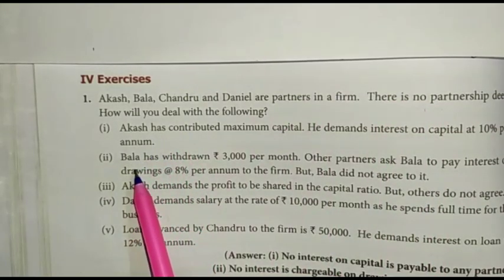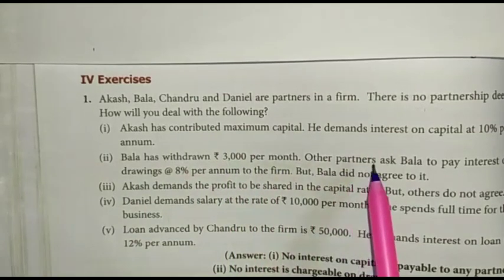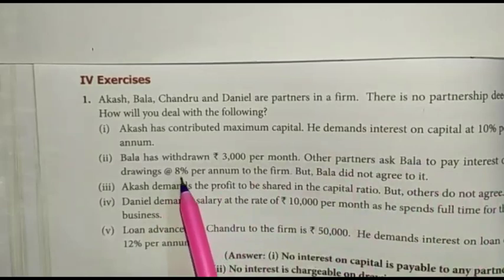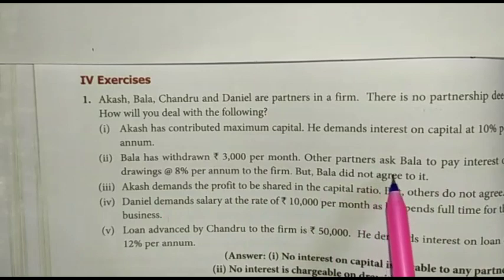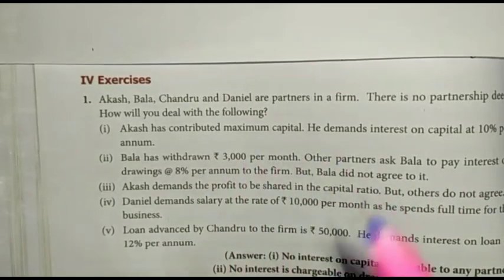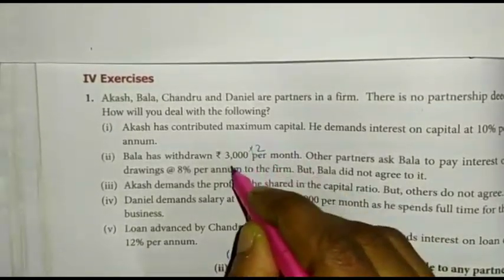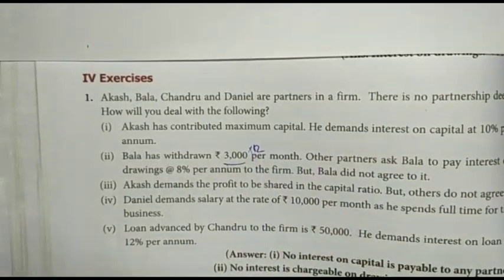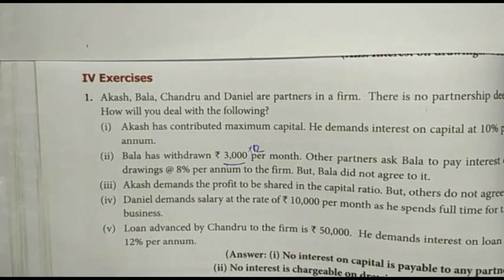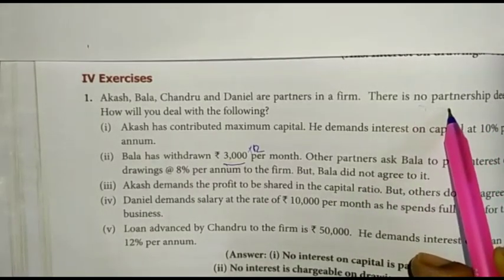Next one: Bala has withdrawn Rs. 3,000 per month. Other partners asked Bala to pay interest on drawings at 8% per annum to the firm, but Bala did not agree. The total withdrawal is 3,000 x 12 = Rs. 36,000 per annum. Since there is no partnership deed, the answer is: no interest is chargeable on drawings made by the partner.